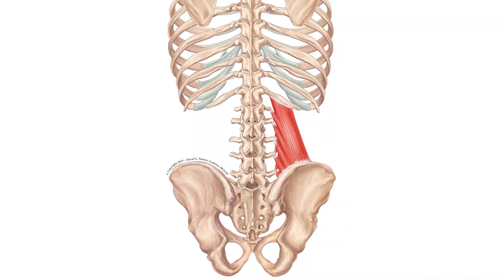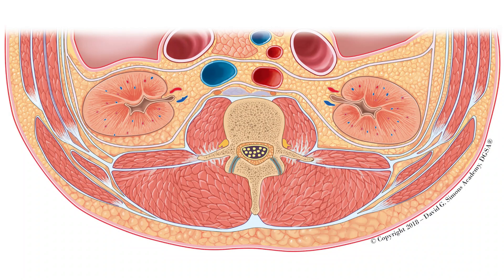The QL muscle is a flat muscle and connects the iliac crest, the transverse processes and the twelfth rib with each other. In the cross-section we can see that it is located directly ventral to the erector spinae muscle and dorsal to the retroperitoneal space.